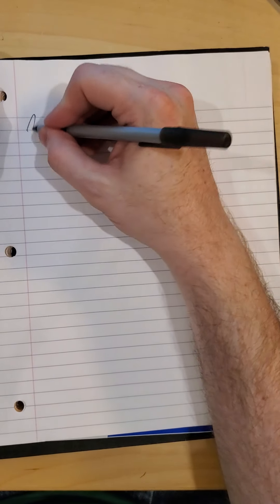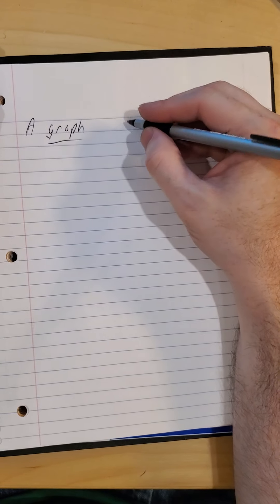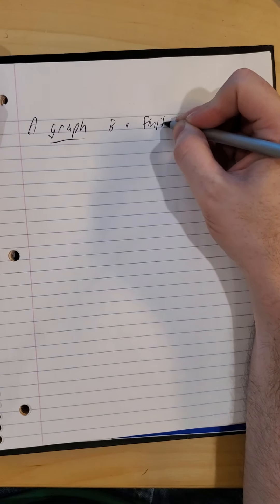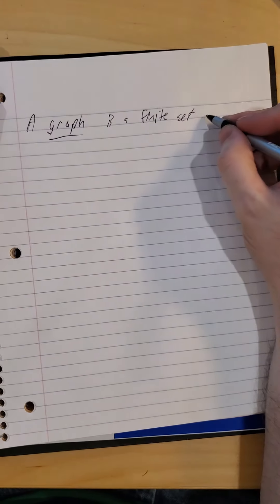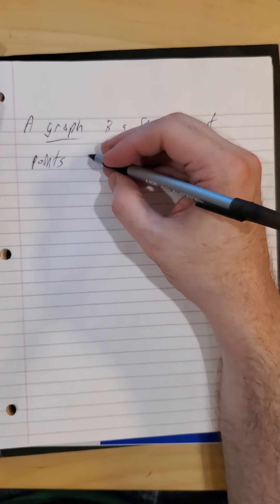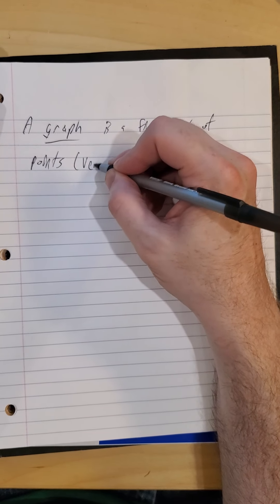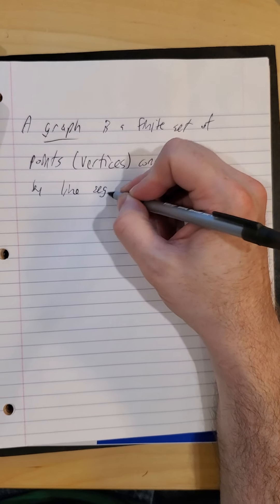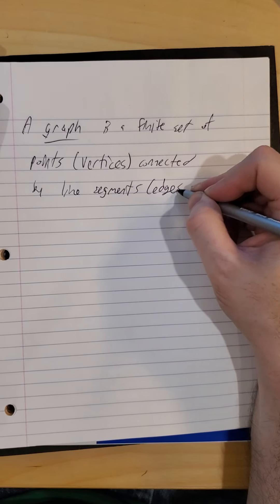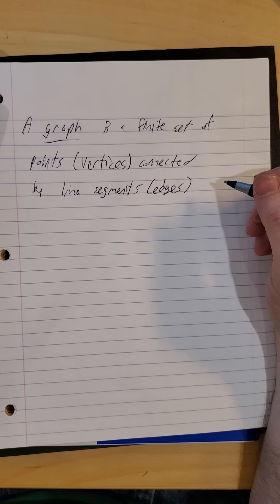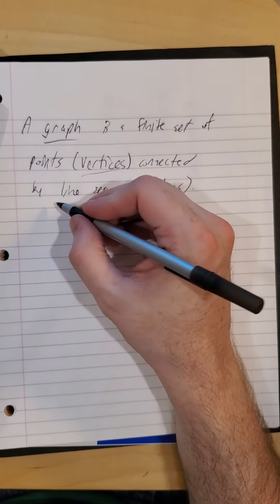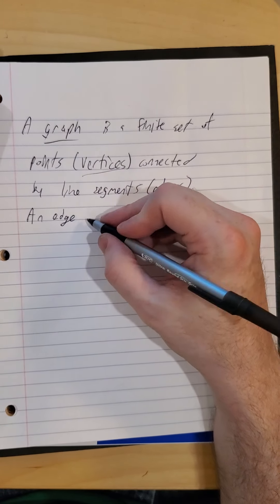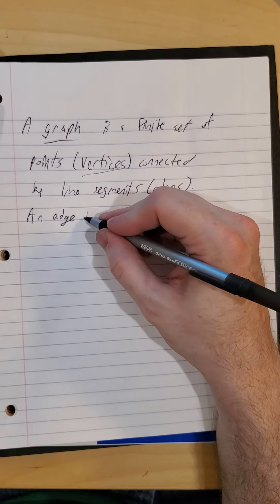So some definitions. What we mean by graph, finite set of points. These are referred to as vertices, connected by line segments, those are edges. And if you have an edge that connects a vertex to itself, you have a loop.